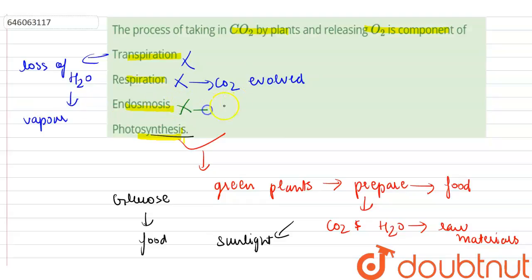And endosmosis is the movement of water from outside to inside the cell when the cell is placed in hypotonic solution. So, the correct option here is photosynthesis. Thank you.